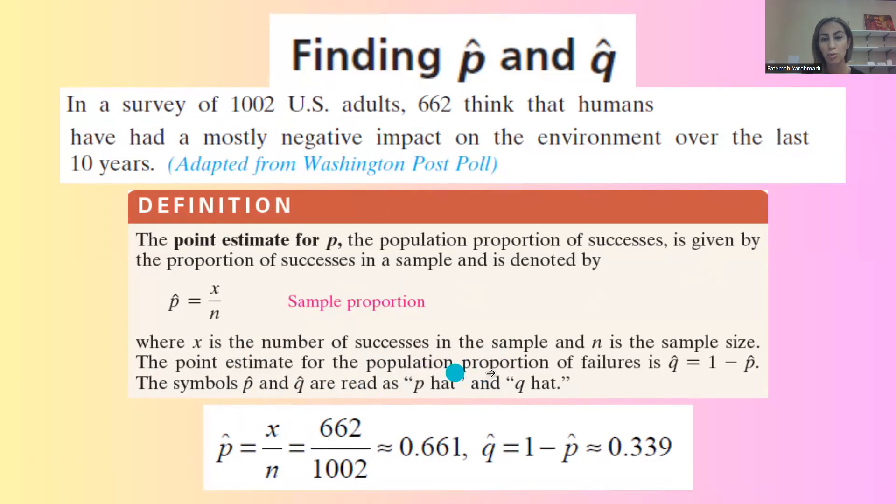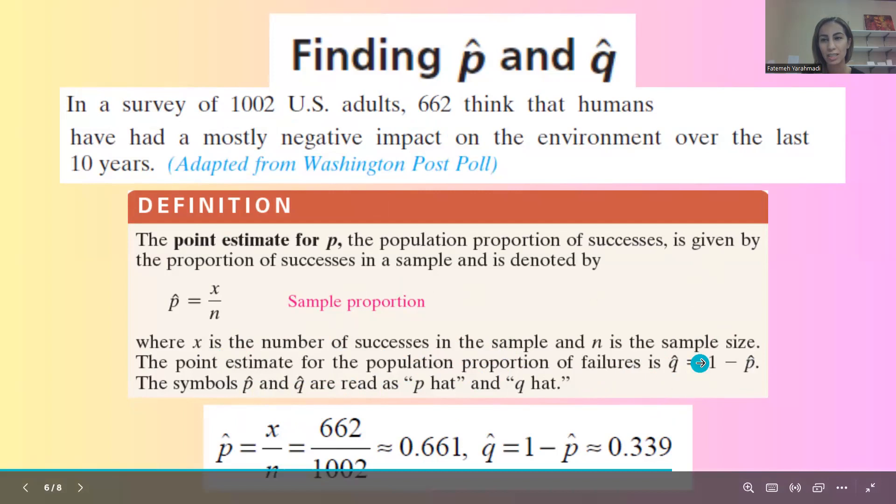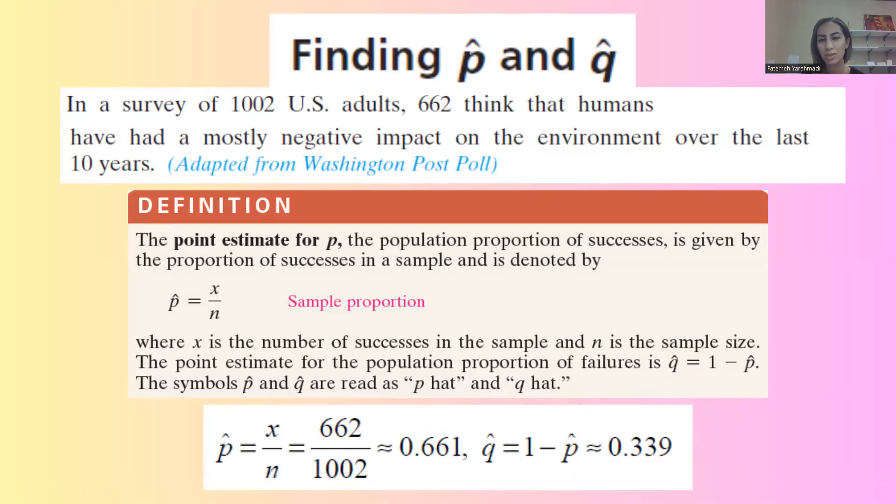Remember, the proportion of failure is Q-hat, which is 1 minus P-hat. Q-hat, or 1 minus P-hat, 1 minus 0.661 is about 0.339 or 33.90%. Thank you.